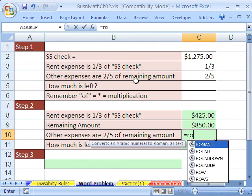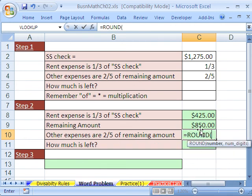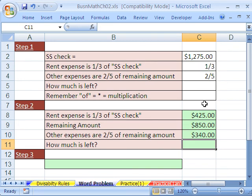Now, this one equals round the remaining amount after the one-third rent times, and I'm going to get my two-fifths, comma two, close parentheses, 340.